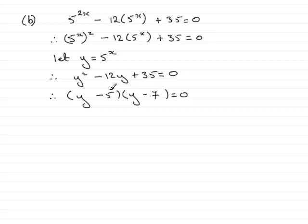We have minus 7y minus 5y—that's the minus 12y—and plus 35 on the end. That's good. Then that would mean that either y - 5 = 0 or y - 7 = 0, leading to y = 5 if we add 5 to both sides, or y = 7 if we add 7 to both sides.